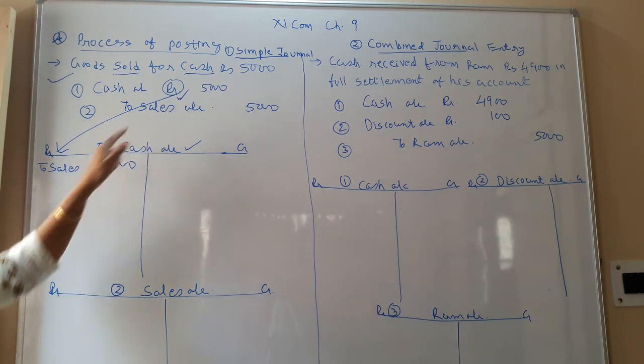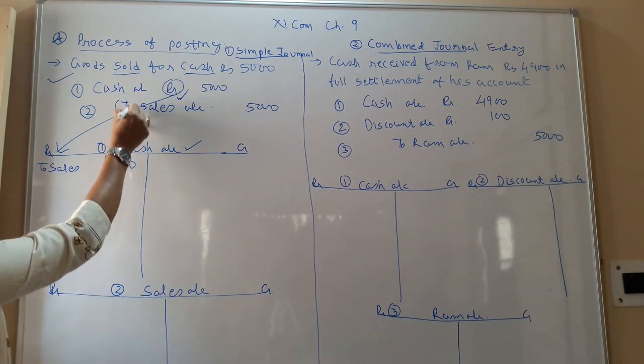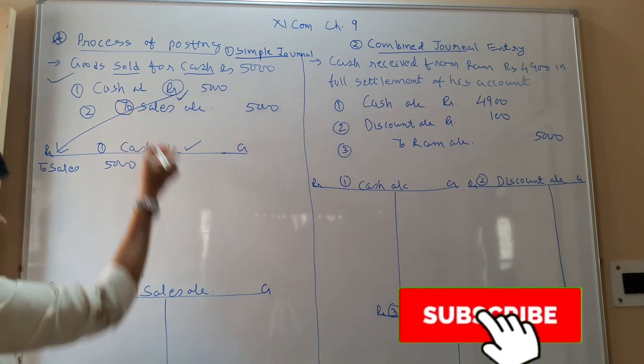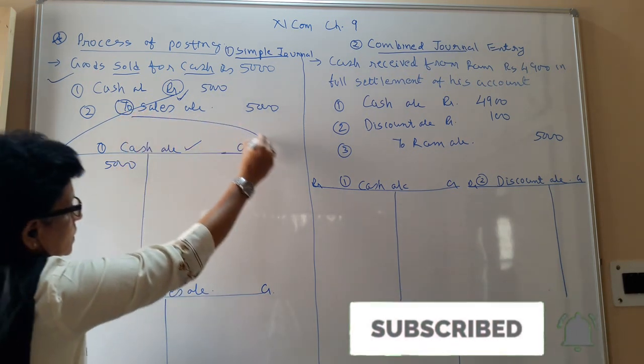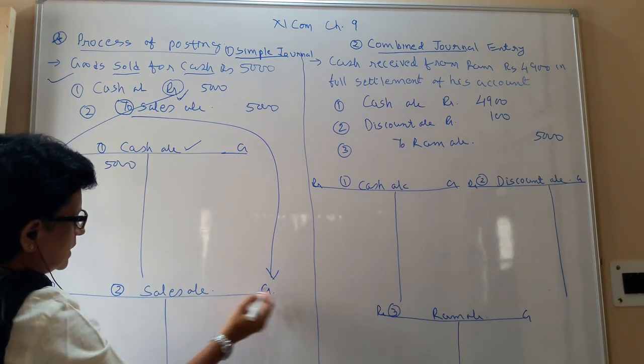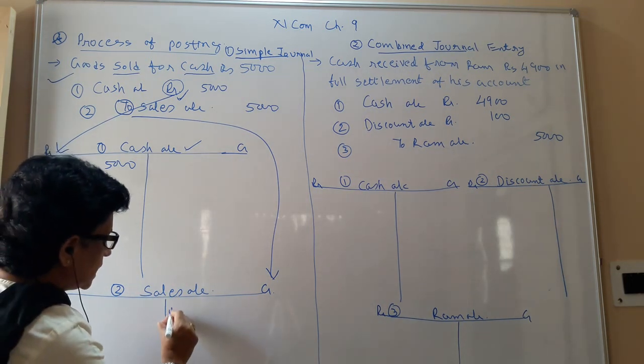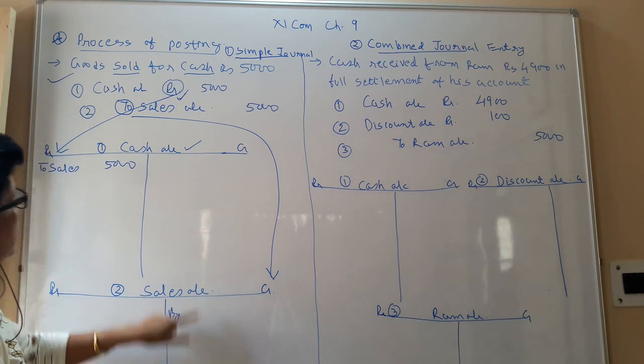Fine? Now the sales account. Sales account is two. Two indicates that it's a credit. So go to the credit side of sales account. And here when you write anything on the credit side, you have to begin with 'by'.